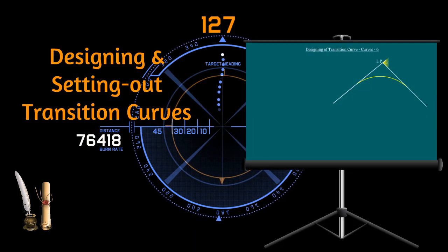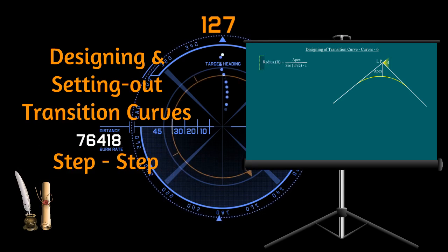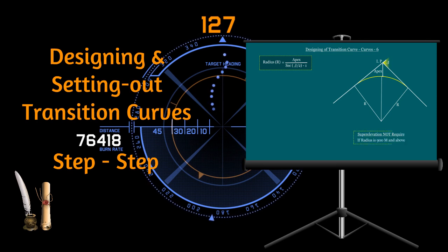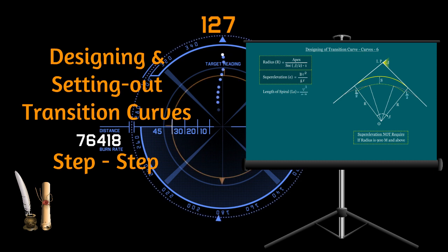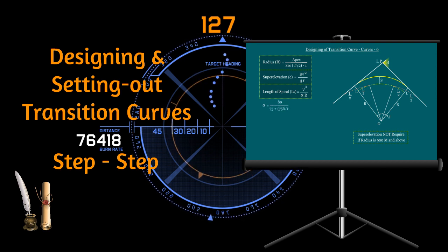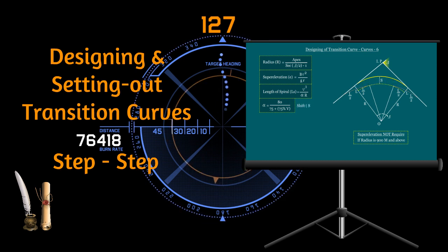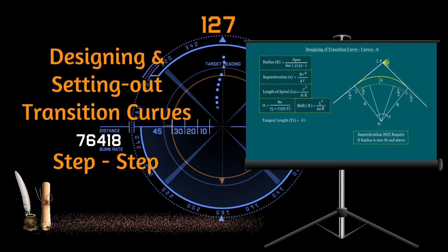In this episode, we are going to see the procedure of designing and setting out of transition curve, step by step. So far, in our previous episodes, we have seen the elements and characteristics of different types of curves, and using that, we have derived many formulas. Here, we will see how to use that knowledge and adopt those formulas step by step. The designing and setting out of a transition curve is the cream knowledge of survey engineers in highway projects. We try to give that cream in just 13 minutes.